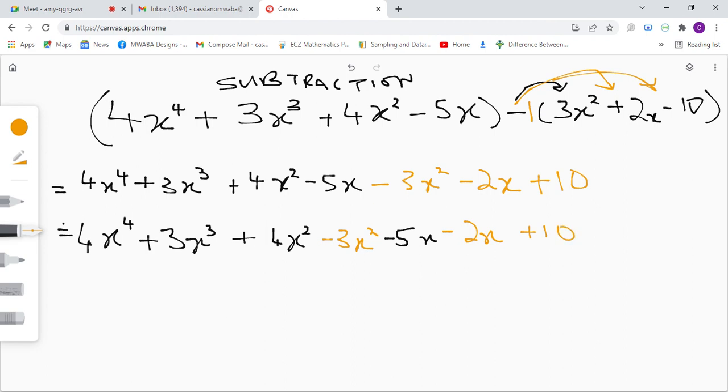All right, so 4x squared minus 3x squared, we get x squared here. Negative 5x minus 2x, we get negative 7x here.